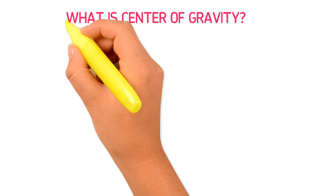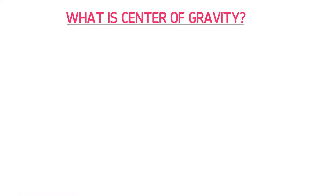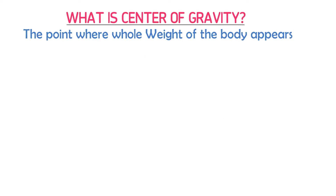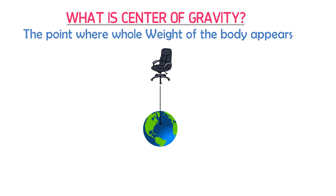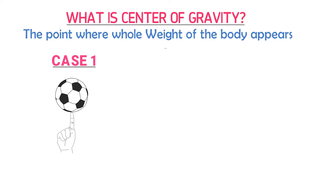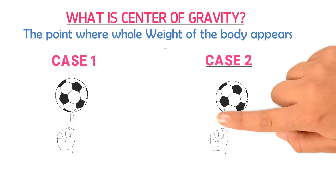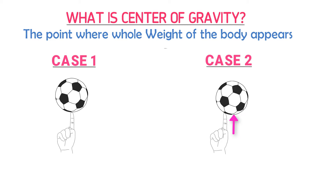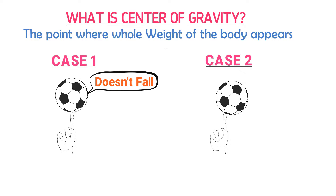What is center of gravity? Center of gravity is the point where the whole weight of the body appears to act. We know that weight is the force between any object and the earth, and every object falls toward the earth's center due to its weight. Consider two cases: in case one, you place a football right above your finger, while in the second case, you slightly misplace the football above your finger. The downward force of the earth acts on both footballs. In case one, the football doesn't fall, while in the second case, the football falls down.